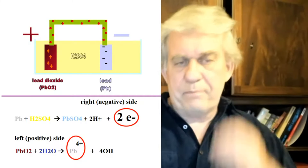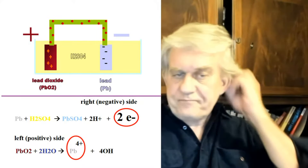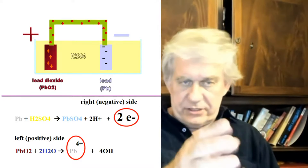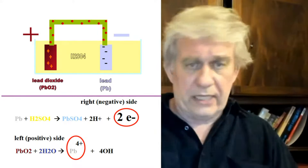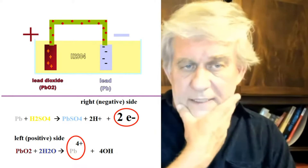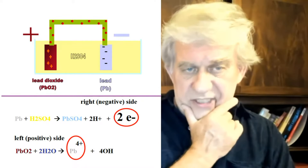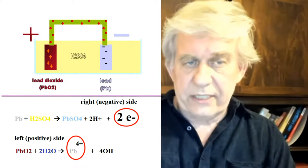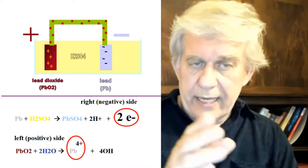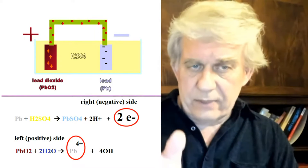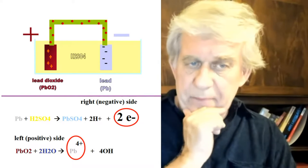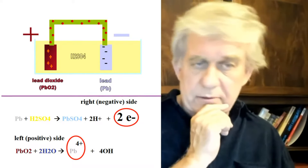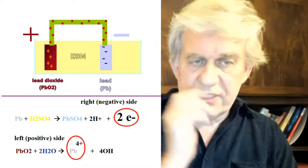The next thing to show is the reaction at both ends. These are the chemical reactions in a lead battery. The negative pole is on the right-hand side of the screen and the positive pole is on the left. The right-hand negative side is related to lead, whereas the positive left-hand side is related to lead dioxide.